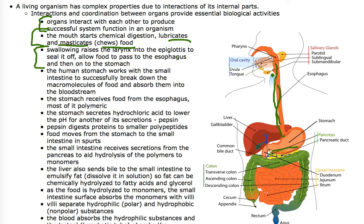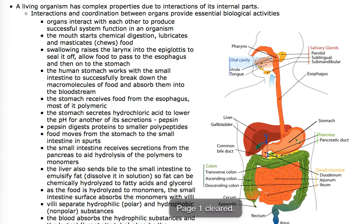In the stomach, bacteria are killed and the stomach works with the small intestine to successfully break down the macromolecules of food and absorb them into the bloodstream. The stomach receives food from the esophagus — most of it is polymeric. The stomach secretes hydrochloric acid to lower the pH for other chemicals inside. Pepsin is a major protease in the stomach responsible for breaking down proteins; it only works at low pH, so the hydrochloric acid creates an environment for pepsin to work, breaking proteins into smaller polypeptides.